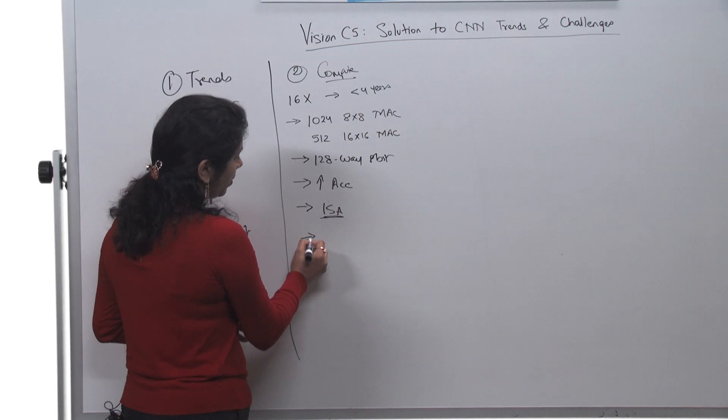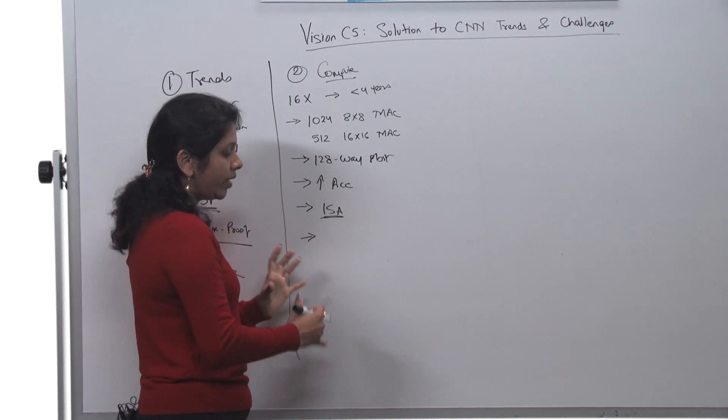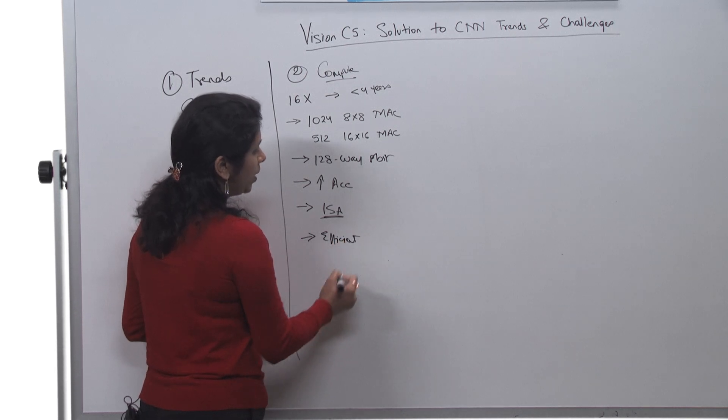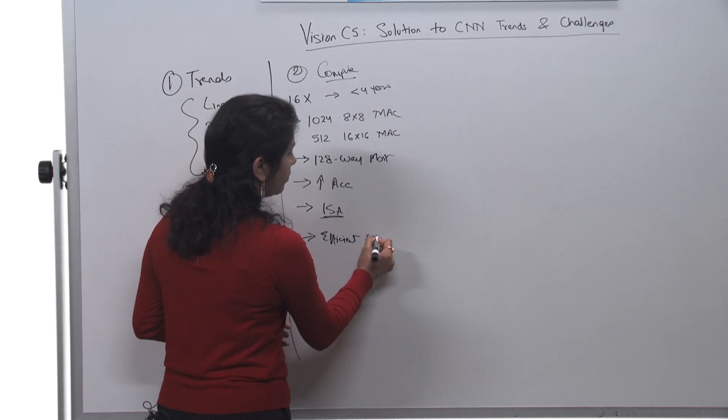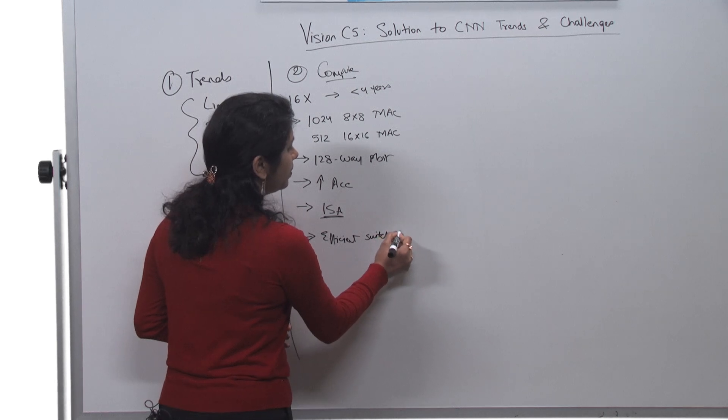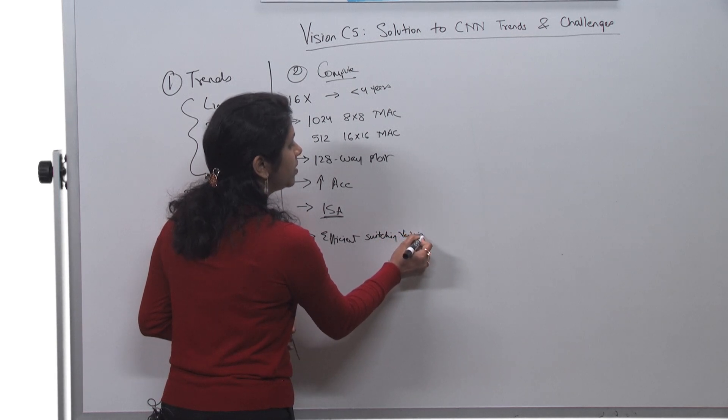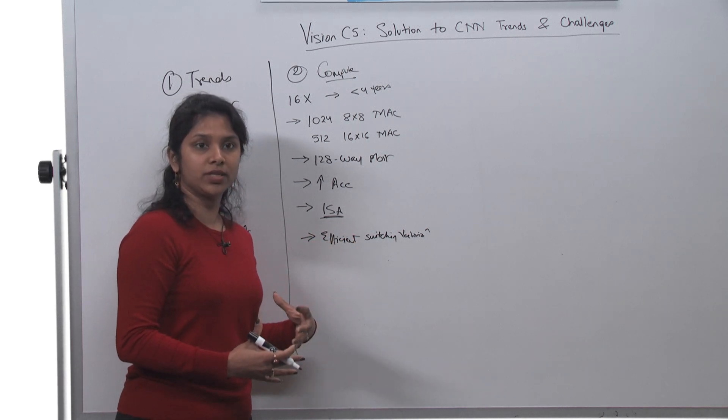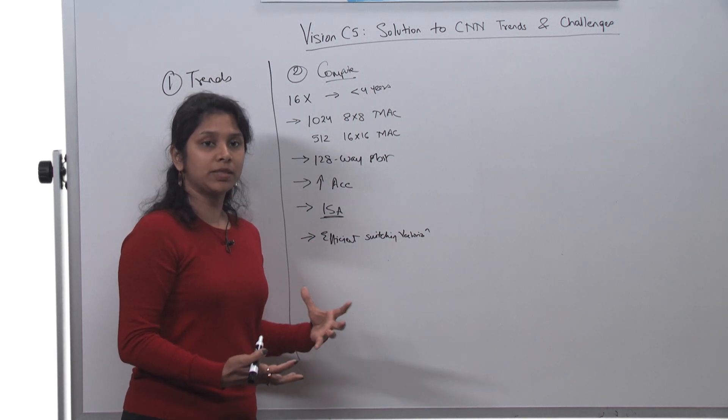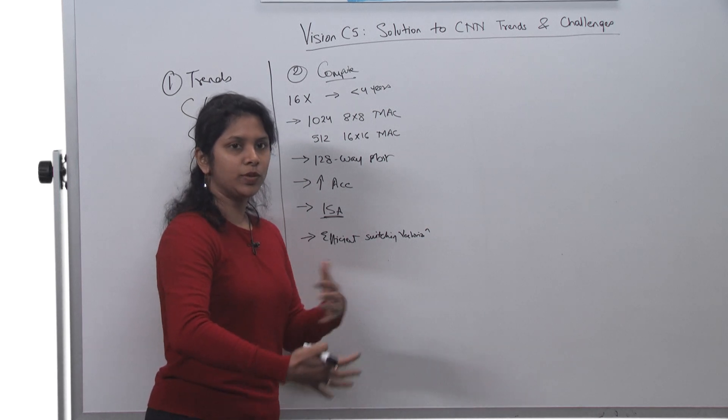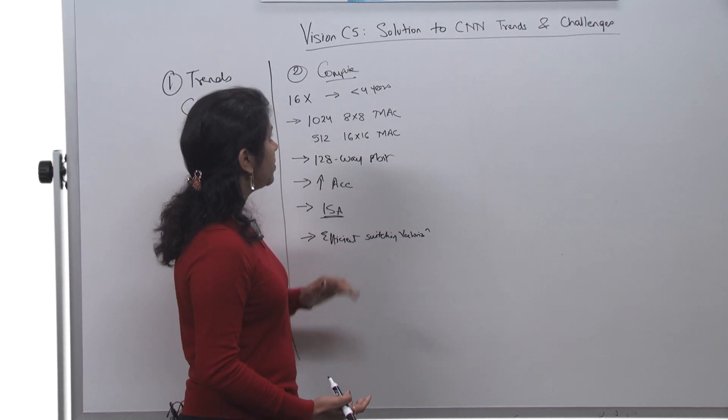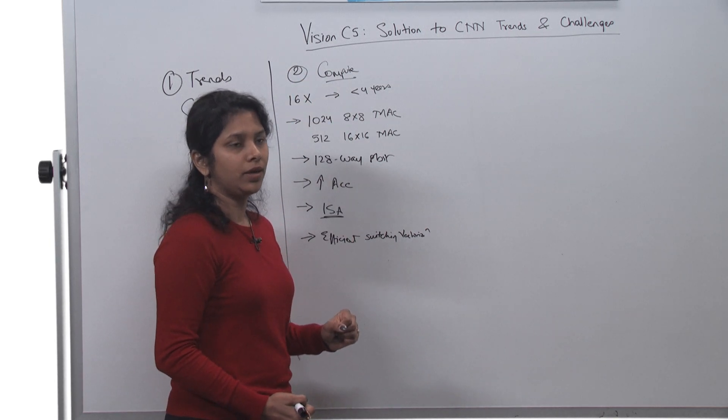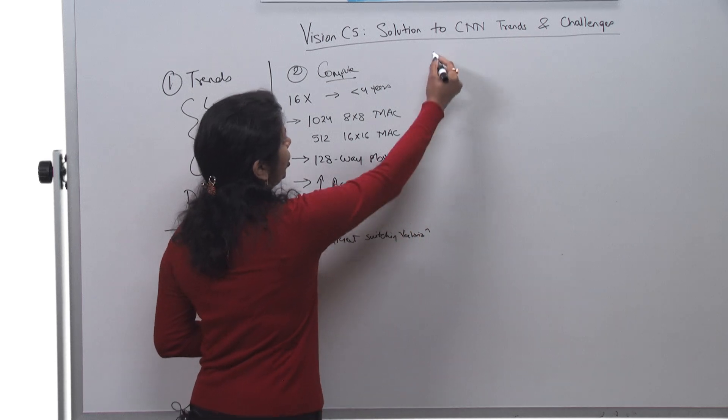And on top of that, we have also added very flexible and efficient way to switch between different vectorization schemes. This is helpful because different layers can go in different vectorization schemes to get the max performance out of it, and we need something so that we can switch very easily. And that is something we support over here. So combining overall, we are able to get the max compute out of Vision C5, which helps us in today's world.